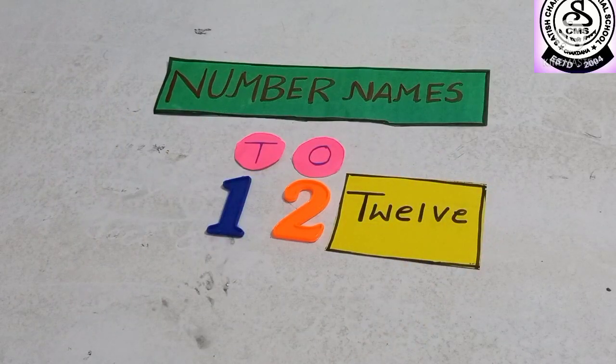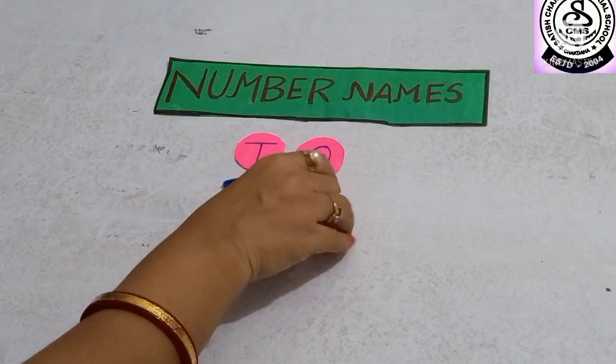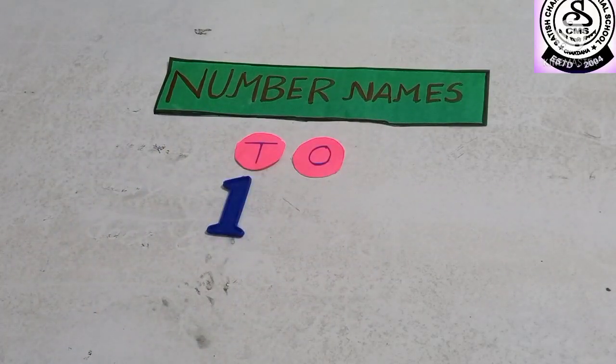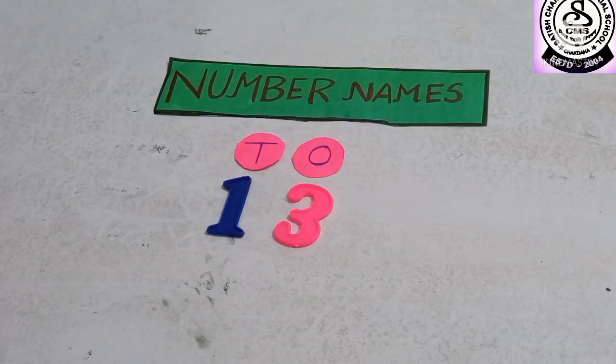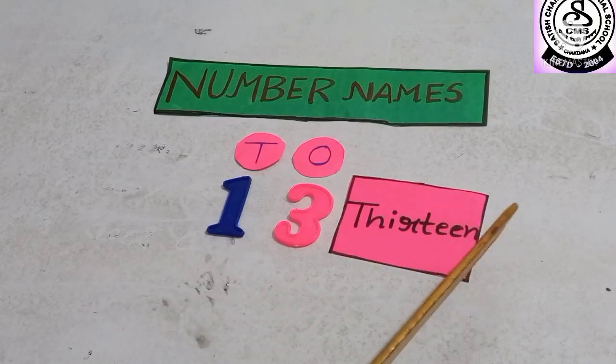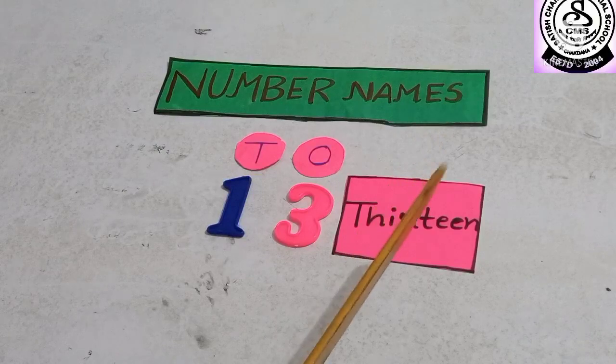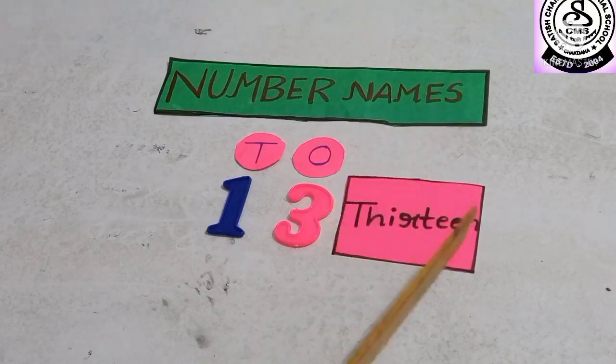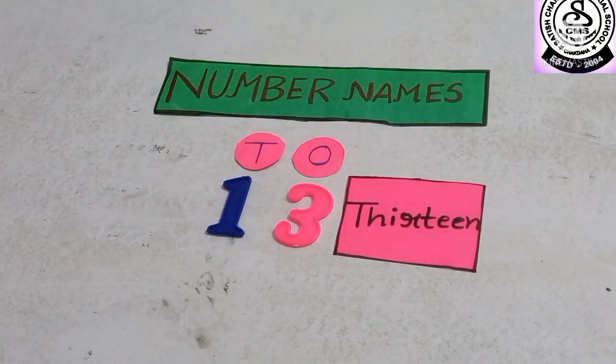What comes after 12? 13. You are right. After 12, 13. 1, 3, 13. T-H-I-R-T-E-E-N, thirteen. What is the spelling of 13? T-H-I-R-T-E-E-N, thirteen.